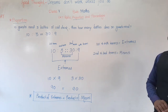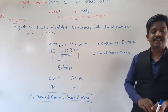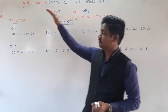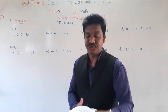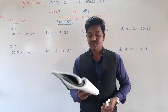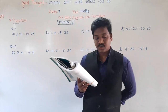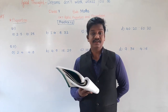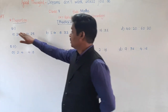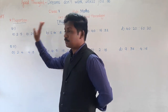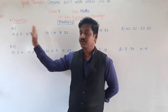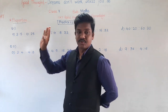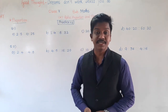We will now solve practice 7.2. Open your page number 127. The first question asks: circle the means in the following. They have given proportions — two ratios which are in proportion. In each proportion there are four terms, and out of these four we have to circle the means — the middle two terms, second and third.